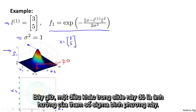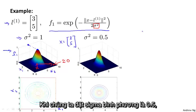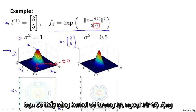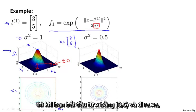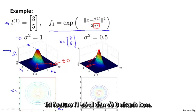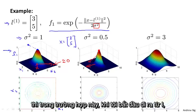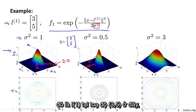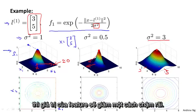Sigma squared is a parameter of the Gaussian kernel, and as you vary it you get slightly different effects. If we set sigma squared to 0.5, the kernel looks similar except the width of this bump becomes narrower and the contours shrink — so f one falls to zero much more rapidly as you move away from l one. Conversely, if you increase sigma squared to 3, then as you move away from l one, the value of the feature falls away much more slowly.